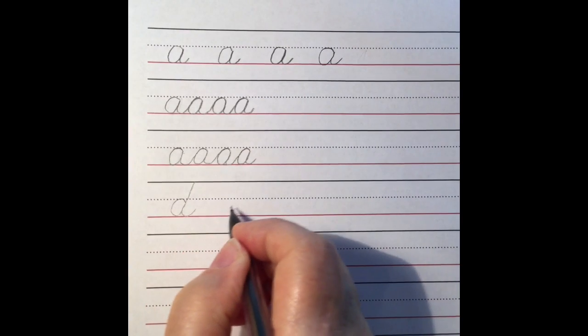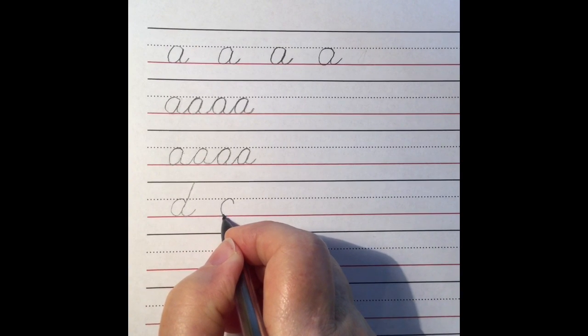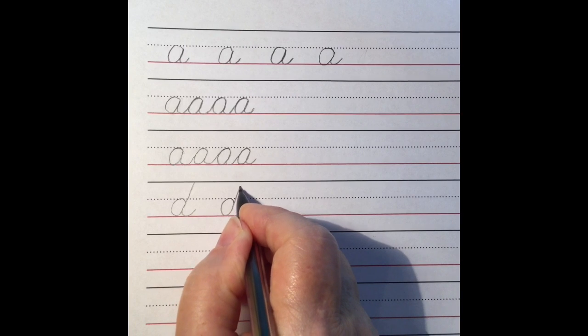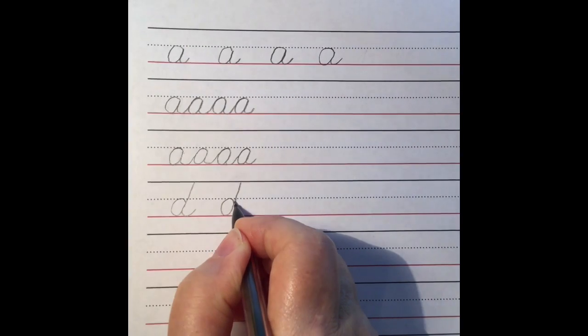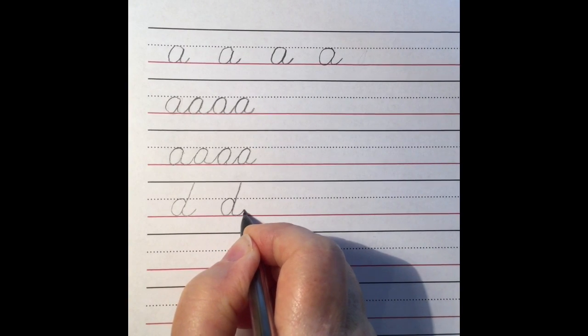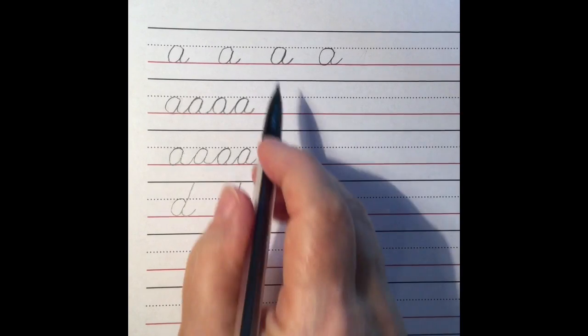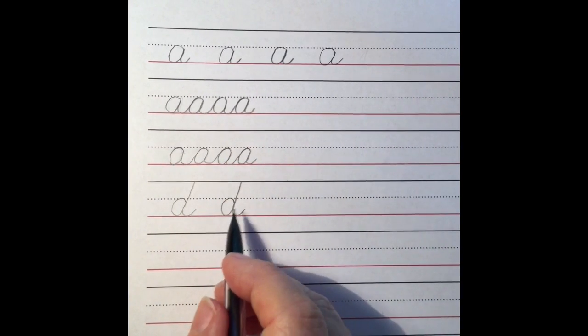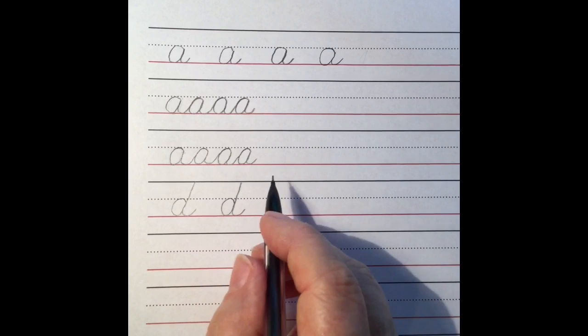So all we do is our down curve up into our under curve, slant down, under curve. So it's really the same as the A, except that the under curve goes all the way to the headline.